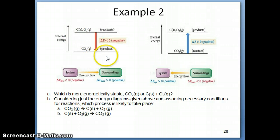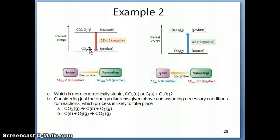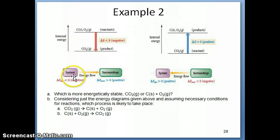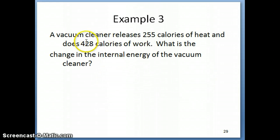That's the idea of energy diagrams and how you can use them to predict reaction directions. We won't do much of this in this chapter — it's something you'll explore more in Chem 12 — but energy allows you to predict whether a reaction proceeds in the decomposition or synthesis direction. In Example 3, a vacuum cleaner releases 255 calories of heat and does 428 calories of work. The question is: what is the change in internal energy of the vacuum cleaner as the system?